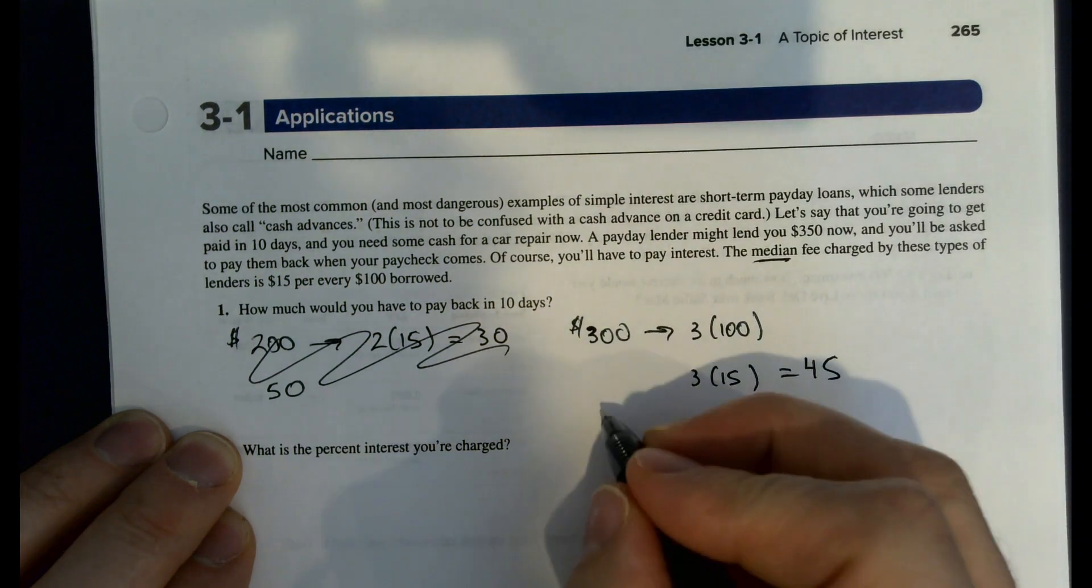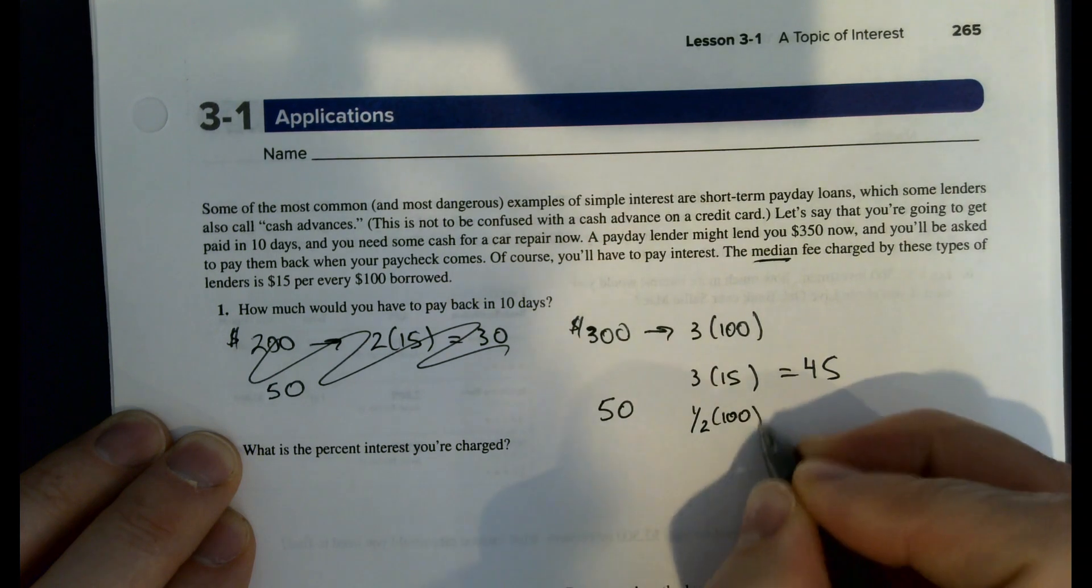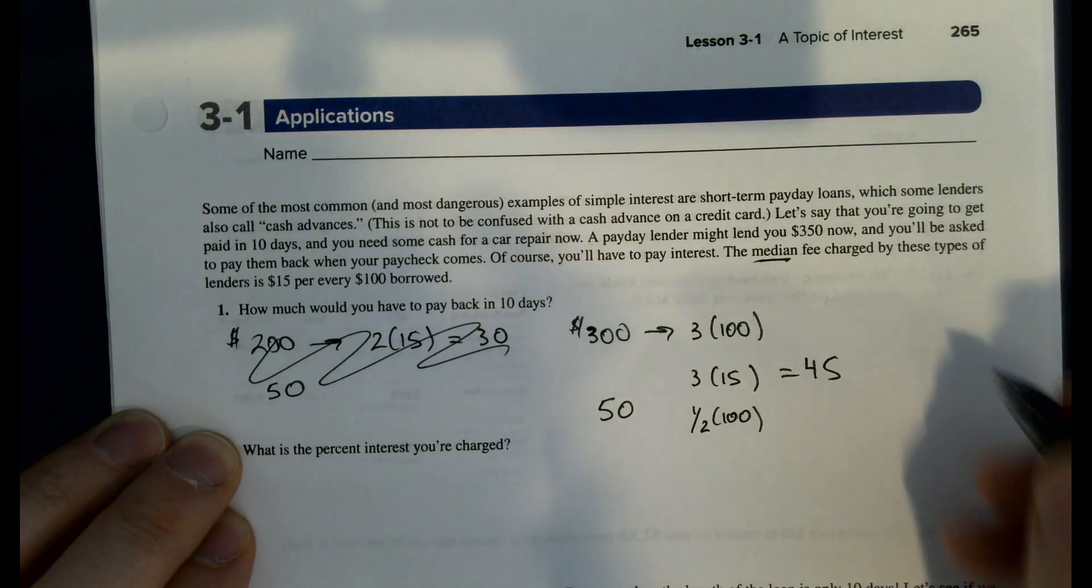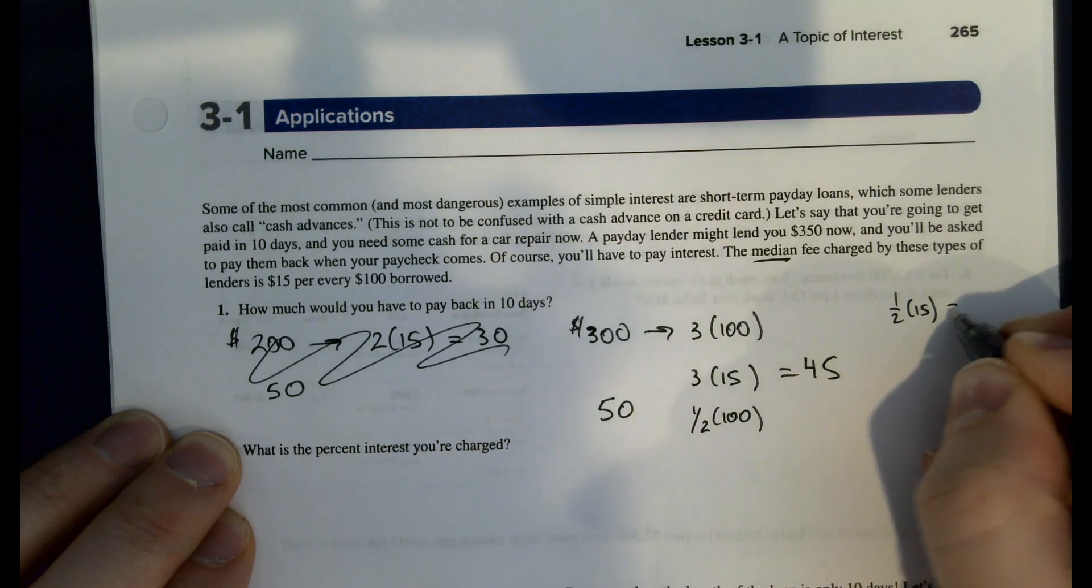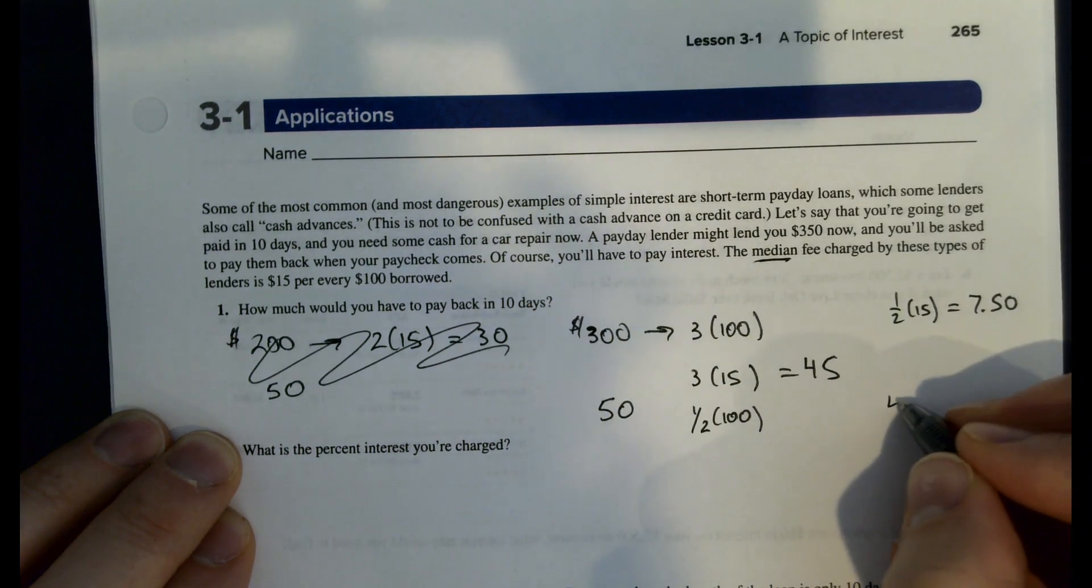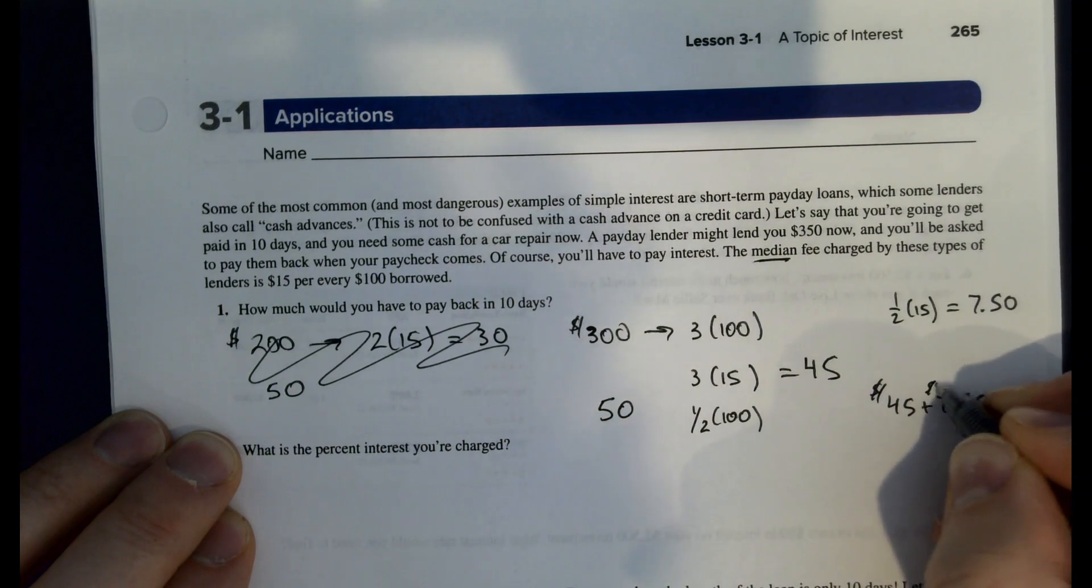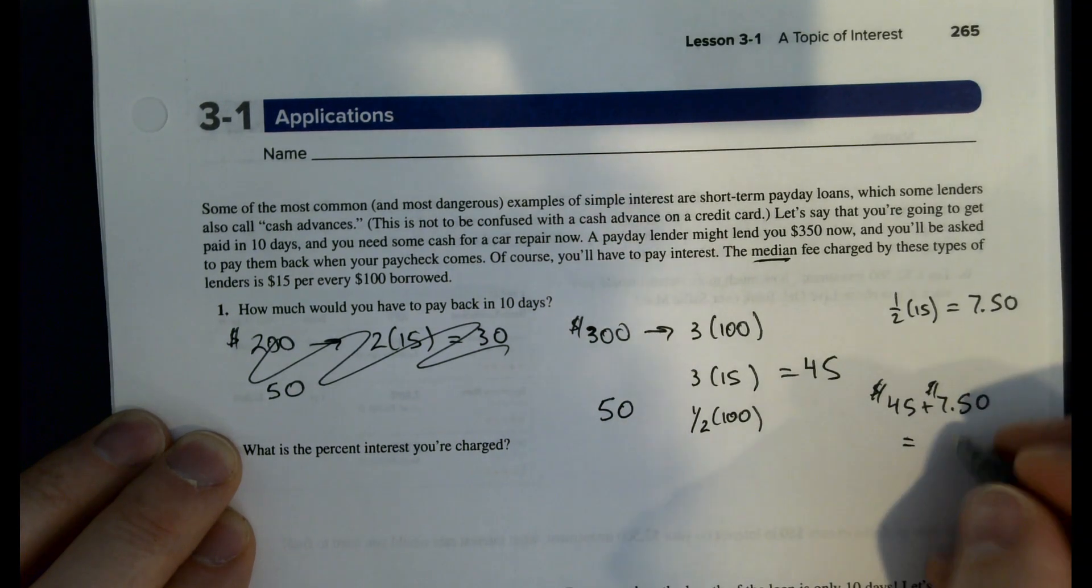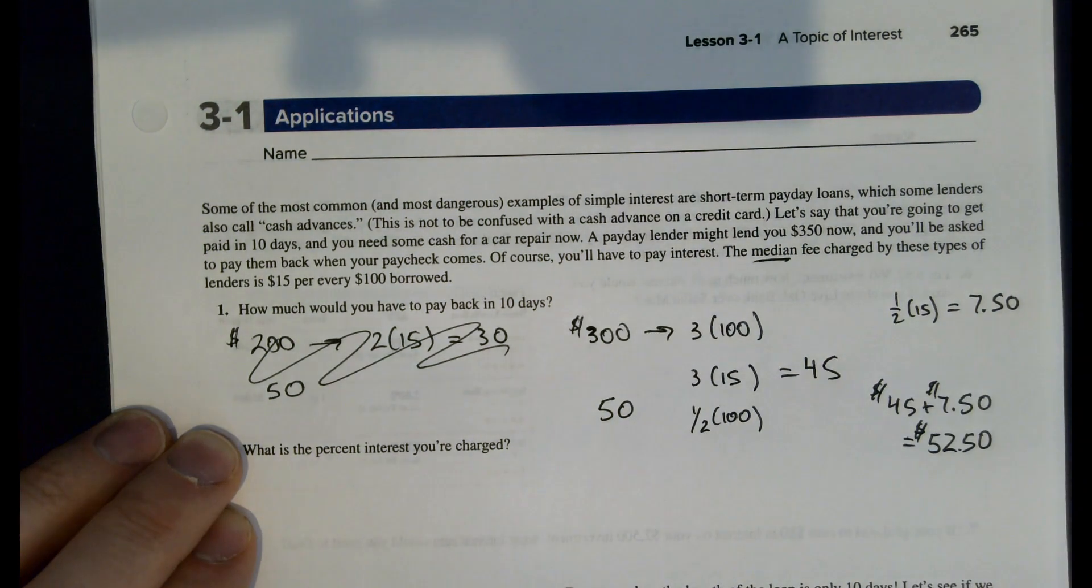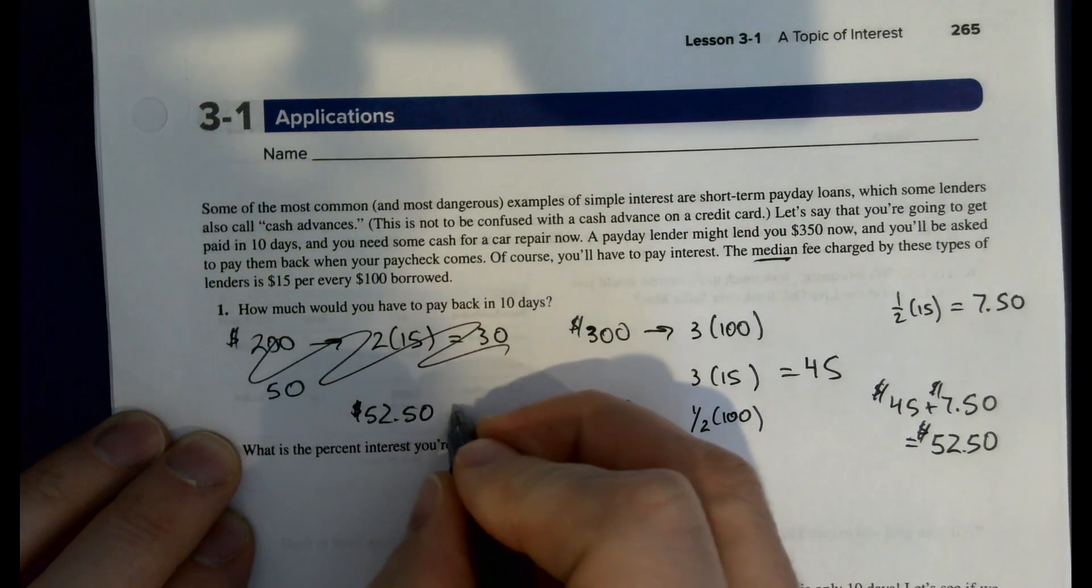So that's $3 times $15 for the fee there, that's $45. And then the $50 is one half of $100. So the fee there is half of the $15 on the $50. So one half of $15 is $7.50. So our total fee for the 10 days is the $45 plus the $7.50. That's $52.50.